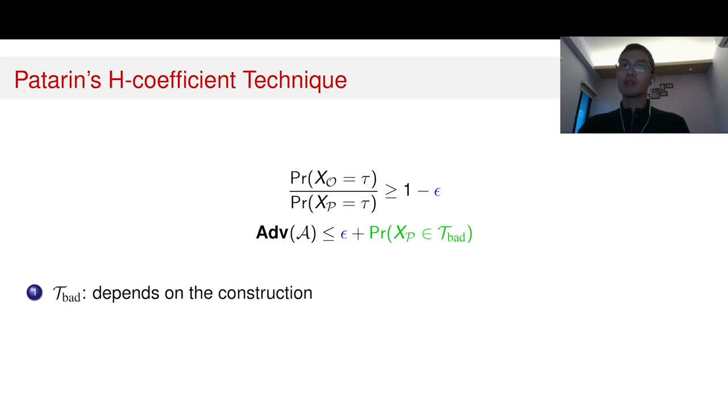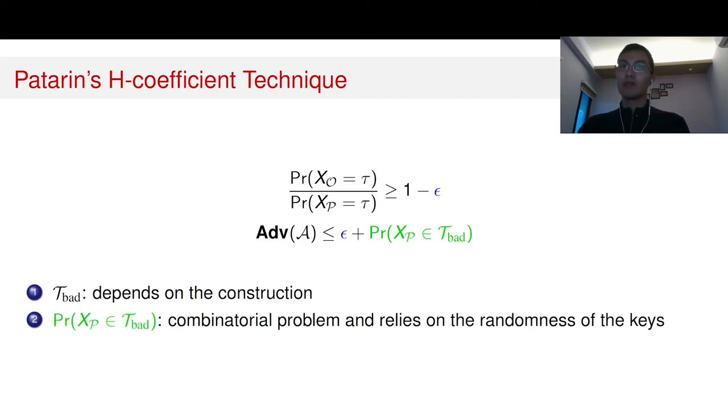First, we need to define the bad transcripts. Then we need to bound the probability of the bad transcripts in the ideal world. And the last step we need to calculate is blue epsilon, which is related to the probability of the good transcripts in the real world with that in the ideal world.